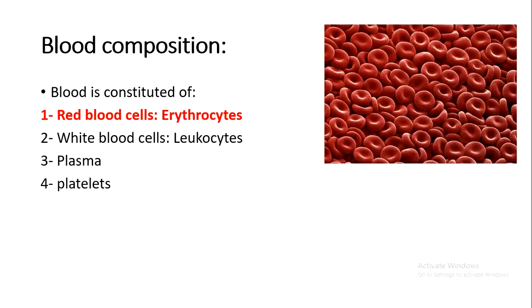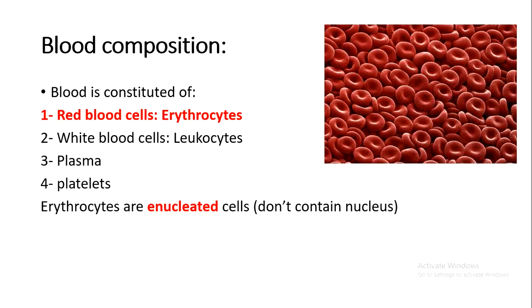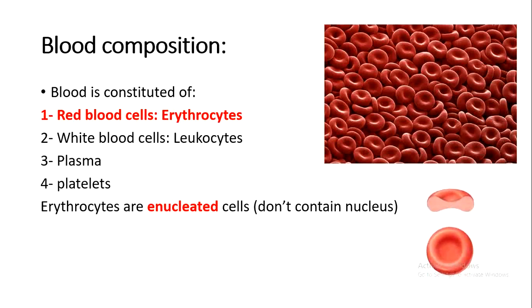We have red blood cells, which are the erythrocytes, and today we're going to practice with them. The white blood cells were discussed in activity 2. An important fact is that erythrocytes, or red blood cells, are enucleated cells — meaning they don't have a nucleus. They are the only cells in our body that don't have a nucleus inside.